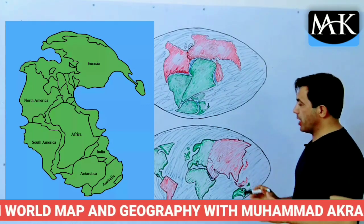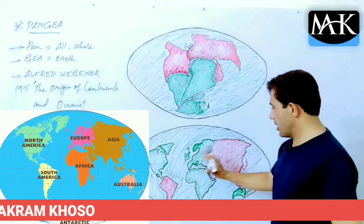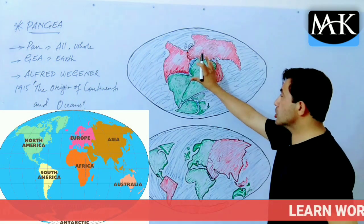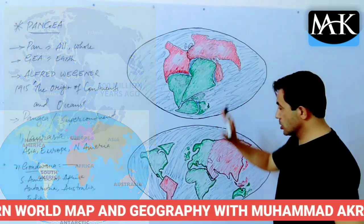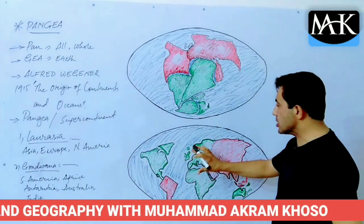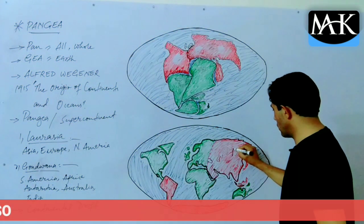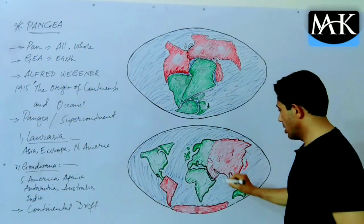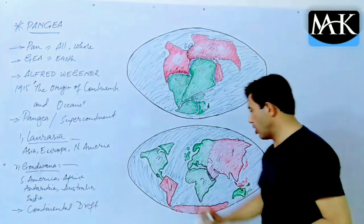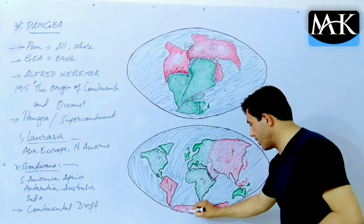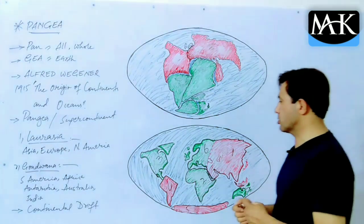I have made two world maps here. This is the current world map — what we have in today's world. And this map shows what the world was like 200 million years ago. Today we have seven continents: number one, Asia, the world's largest continent; number two, Africa; number three, North America; number four, South America; number five, Antarctica; number six, Europe; and number seven, Oceania, also called Australia.